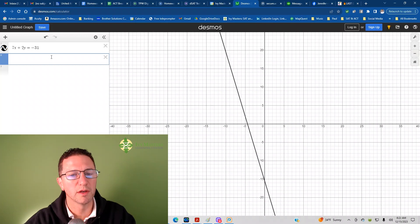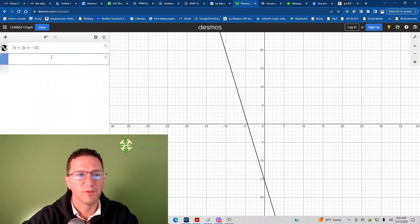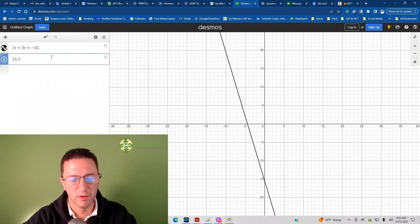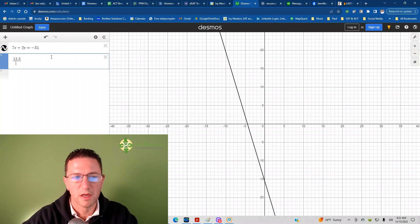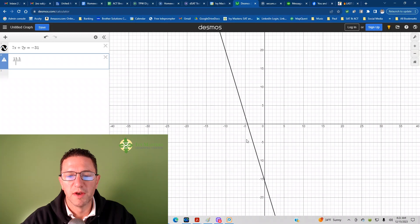So over here, I could put, I'm not going to put negative 15.5, actually. I'm going to put 15.5. Why am I going to do that? Because both of these are negative. So I'm going to have a negative over a negative. It's going to turn positive anyway.